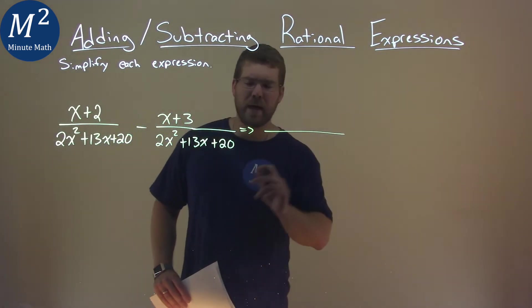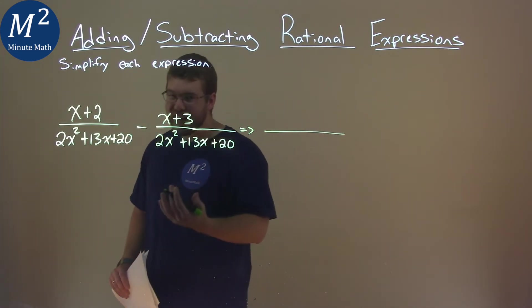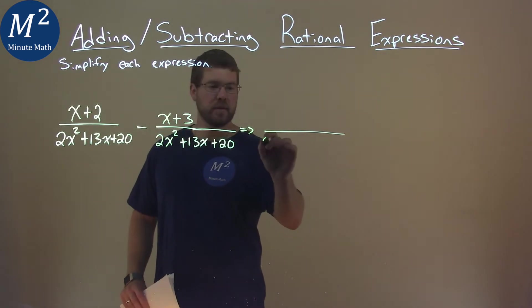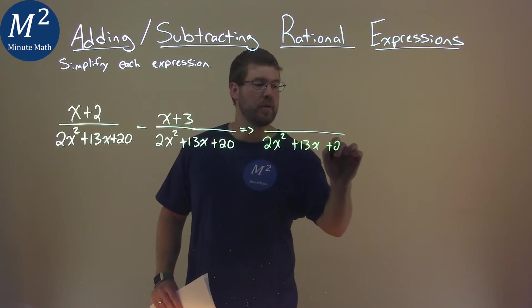Well, notice we have the same base for both parts here, or denominators. So, because we have that, we can combine it easily. 2x squared plus 13x plus 20 here.